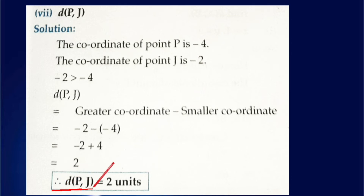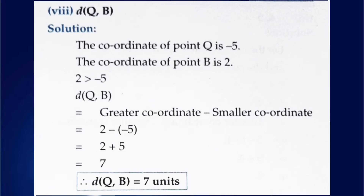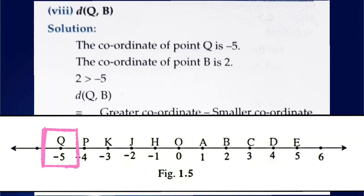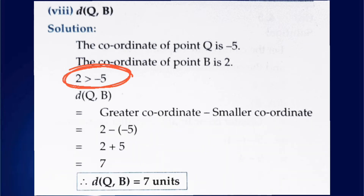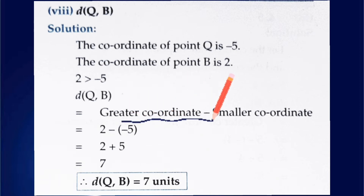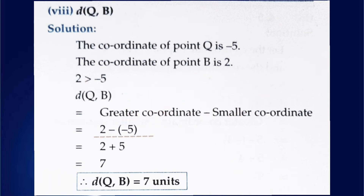Therefore the distance between P and J is 2 units. For the eighth one, we find the distance between point Q and point B. The coordinate of point Q is minus 5 and the coordinate of point B is 2. Since 2 is greater — every negative number is smaller than a positive number — the distance between Q and B equals 2 minus (minus 5). Minus minus becomes plus, so we get 2 plus 5, which equals 7. Therefore the distance between Q and B is 7 units. That was question number 1.